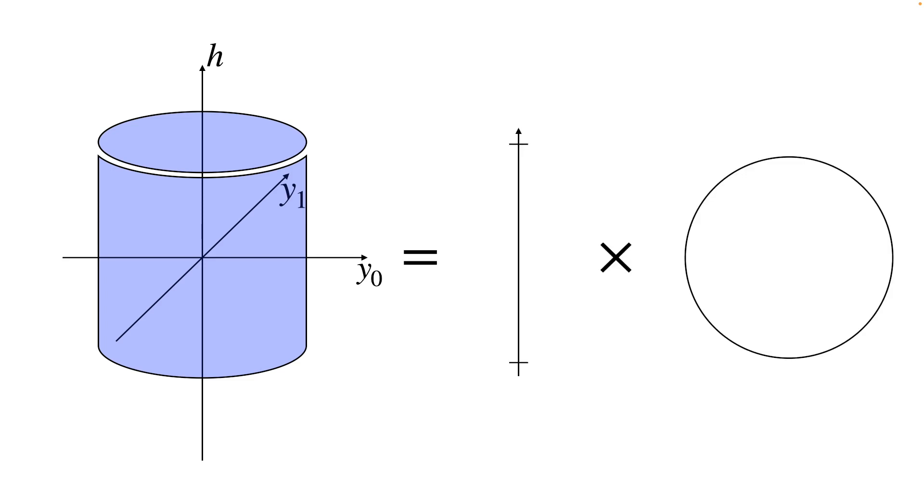The solid cylinder is convenient for sampling if we consider it as the product of an interval and a disc. The interval can be sampled by standard Fibonacci sampling. And for the disc, we use the mapping from the square.